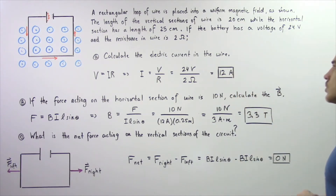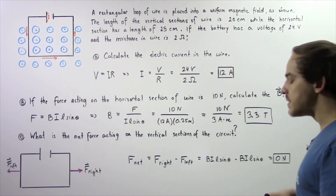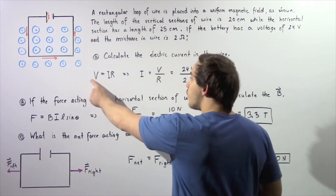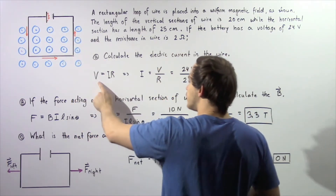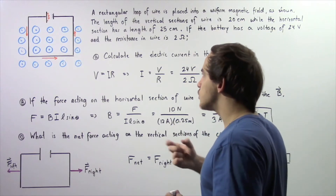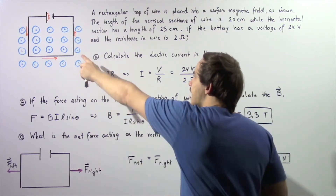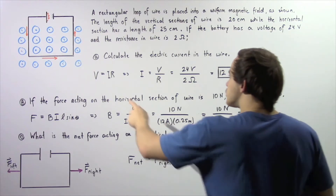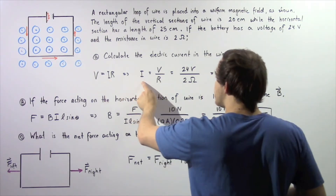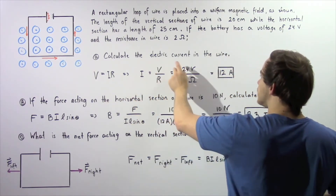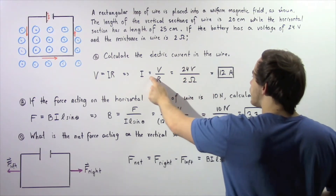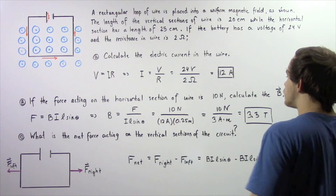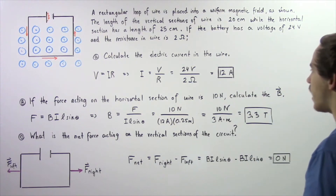To calculate the electric current inside our wire, we simply use Ohm's law, which tells us the voltage across our battery is equal to the electric current multiplied by the resistance R. Solving for I, we get I equal to the voltage of 24 volts divided by the resistance of 2 ohms, which gives us an electric current of 12 amps.